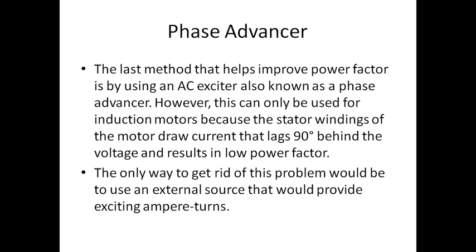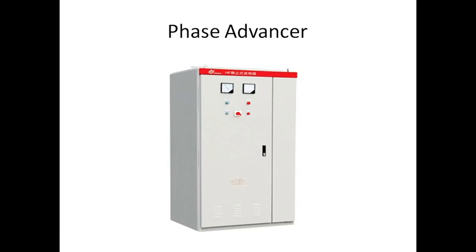Next is the phase advancer, which is the last method. It helps in improving power factor by using an AC exciter, also known as a phase advancer. This can only be used for induction motors, because the stator winding of the motor draws current which lags 90 degrees behind. The phase advancer supplies exciting ampere-turns at slip frequency, which sufficiently reduces the lagging KVA drawn by the motor.